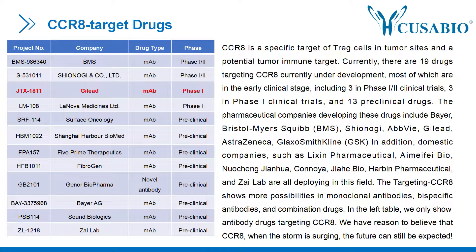The pharmaceutical companies developing these drugs include Bayer, Bristol-Myers Squibb, Shionogi, AbbVie, Gilead, AstraZeneca, and GlaxoSmithKline. In addition, domestic companies such as Li Xin Pharmaceutical, AmiFaBio, Nuacheng Jinhua, Kanoya, Giabio, Harbin Pharmaceutical, and Xilab are all deploying in this field. Targeting CCR8 shows more possibilities in monoclonal antibodies, bispecific antibodies, and combination drugs. In the left table, we only show antibody drugs targeting CCR8.